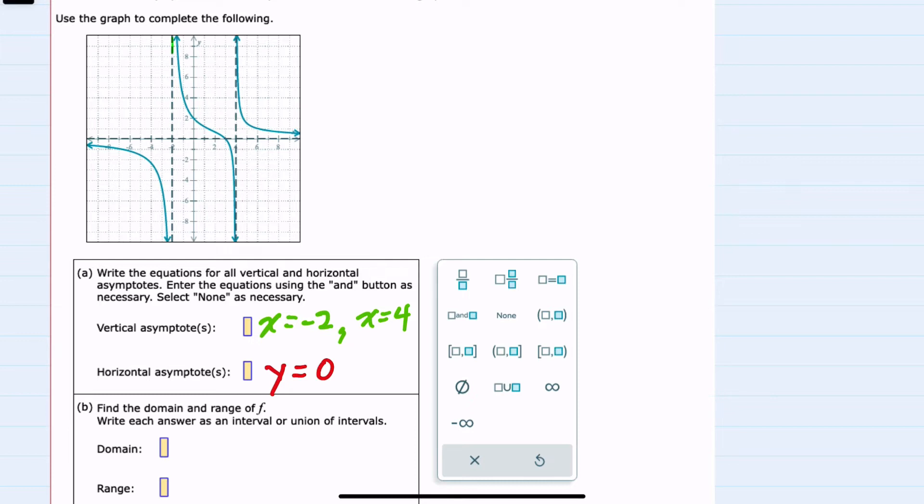So looking left to right our line appears to go on forever to the left but then it has a break here at that asymptote, has all of the values in between the two asymptotes, and then starts again and seemingly goes on forever to the right.